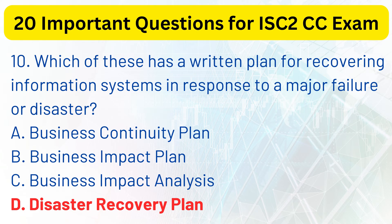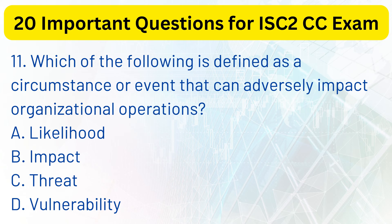Question 11. Which of the following is defined as a circumstance or event that can adversely impact organizational operations? a. Likelihood. b. Impact. c. Threat. d. Vulnerability. The correct answer is c. Threat.